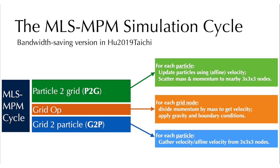During particle-to-grid transfer, we calculate force based on deformation gradient. We scatter mass, particle elasticity force, and APIC momentum to grid nodes. We normalize grid velocity and apply gravity.